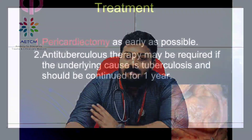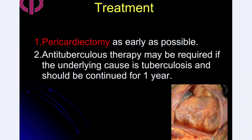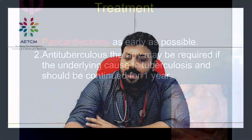Treatment: pericardiectomy is the treatment of choice and should be done as early as possible. If the underlying cause is tuberculosis, anti-TB therapy is required and should be continued for a period of one year.